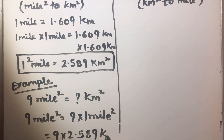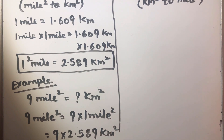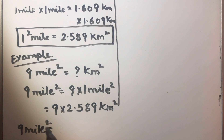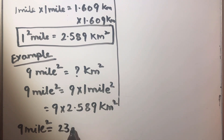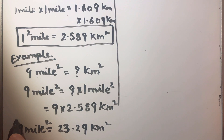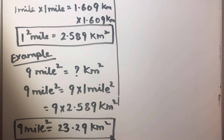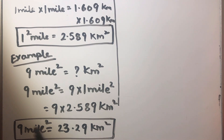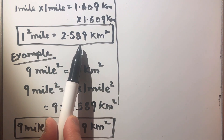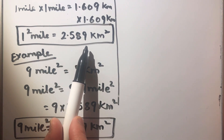So we just need to multiply by 2.589 square kilometers, which will give us 23.29 square kilometers. So to convert from square miles to square kilometers, we just need to multiply by the conversion factor which is 2.589.